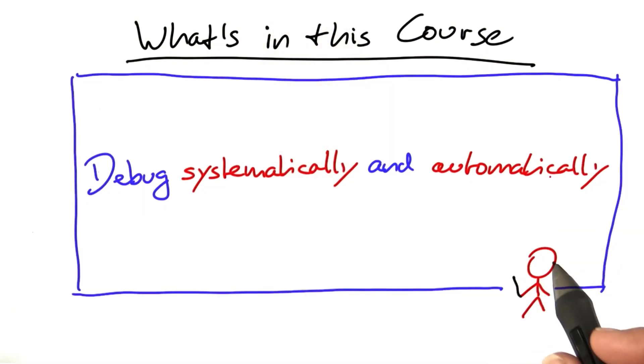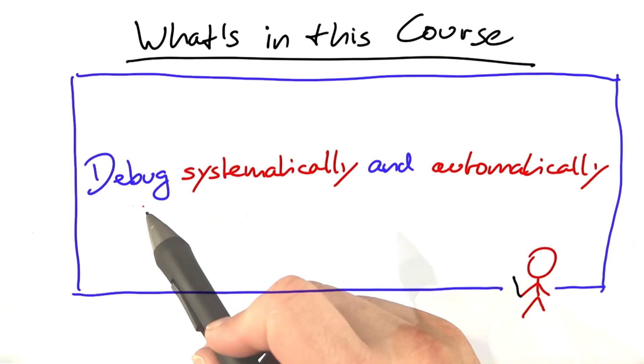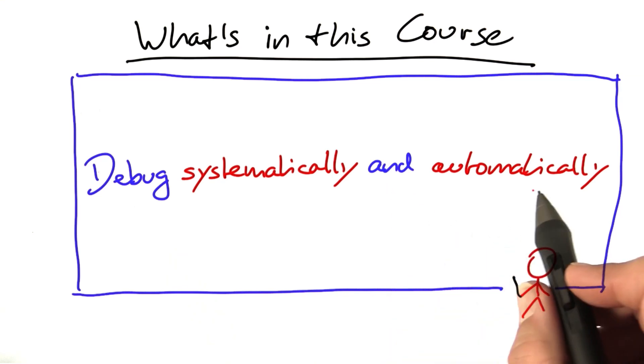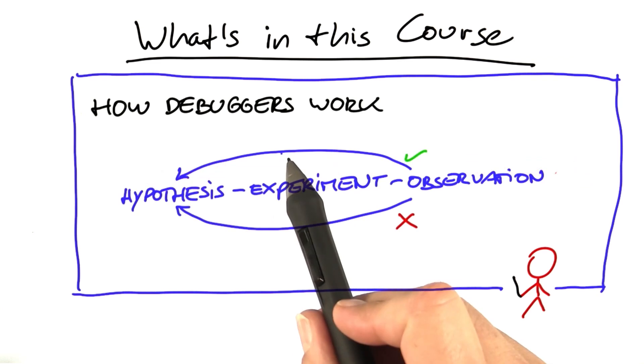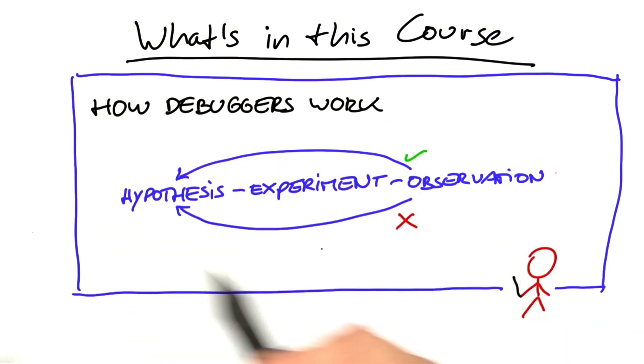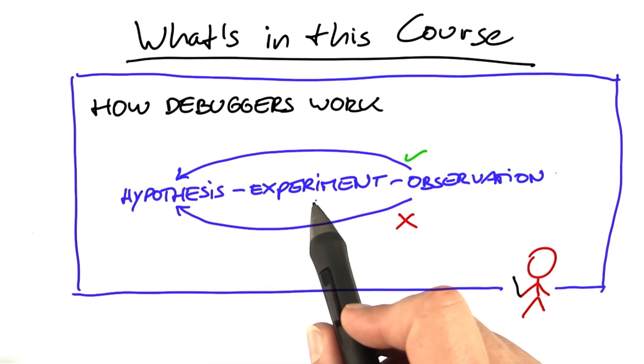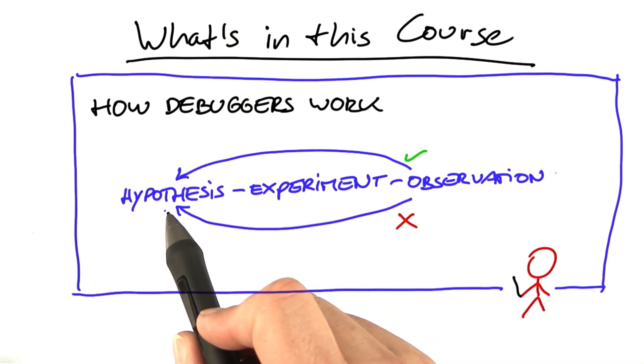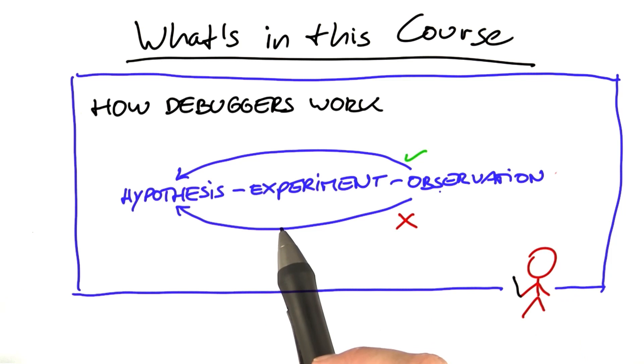Welcome to the Udacity course on debugging. The aim of this course is to teach a systematic approach to debugging, and we're even going to explore a number of automatic tools that do the debugging for you. We're going to explore how debuggers work, in particular, the scientific method of debugging, by which, through a series of experiments, we gradually refine a hypothesis until we end up with a diagnosis on why the program fails. On top of that, we're going to build our own interactive debugger in Python.